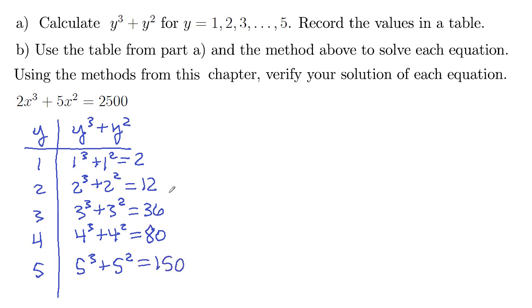So that's part a, is just filling in that table. And then part b, they want us to use the method to actually solve this equation. So our a value is equal to two, our b value is equal to five, and our value of c is equal to twenty-five hundred.